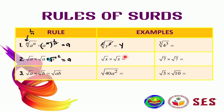Just like the example here: we have square root of x multiplied by the square root of x. So this one will become square root of x squared, and these cancel out to be just x.